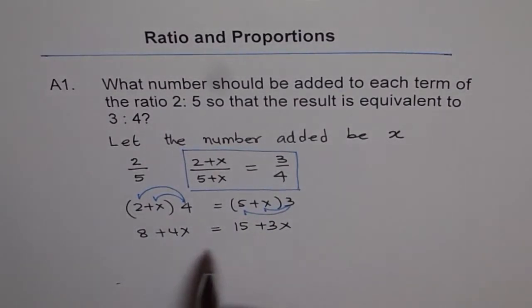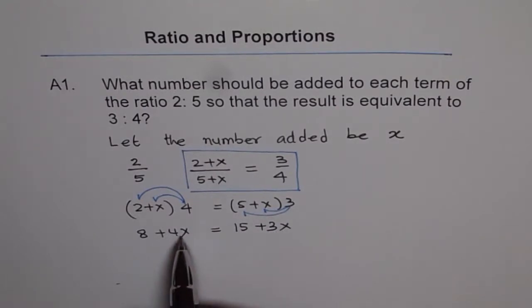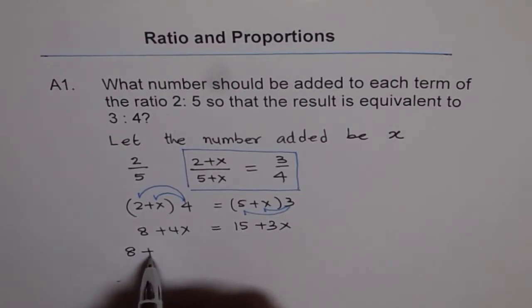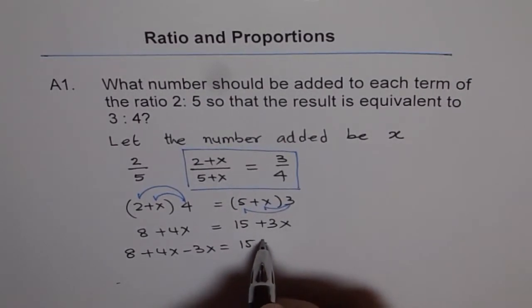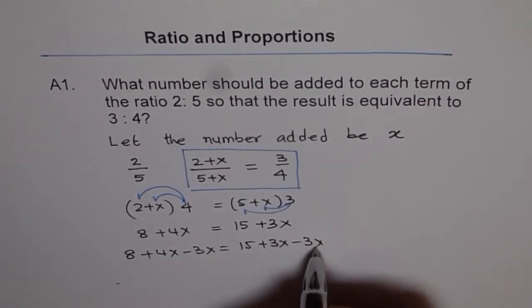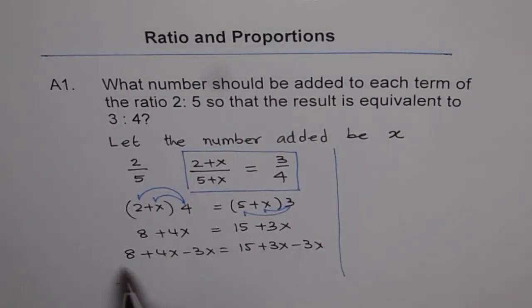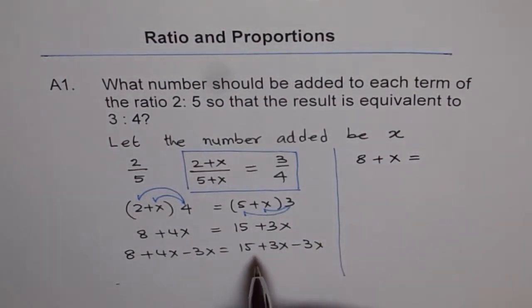Now, we have to solve this. To solve this, we have to bring like terms together. So, we can take away 3x, bring it on this side and take away 8 from here. So, that is how we will solve it. So, if we take away 3x, we get 1. So, let me write this step like this: 8 plus 4x minus 3x equals to 15 plus 3x minus 3x. So, we get this. Let me do it on the right side. So, we have 8 plus x. 8 plus x equals to 15.